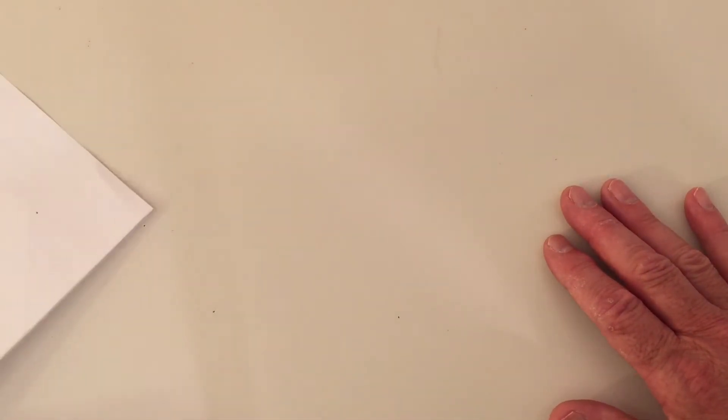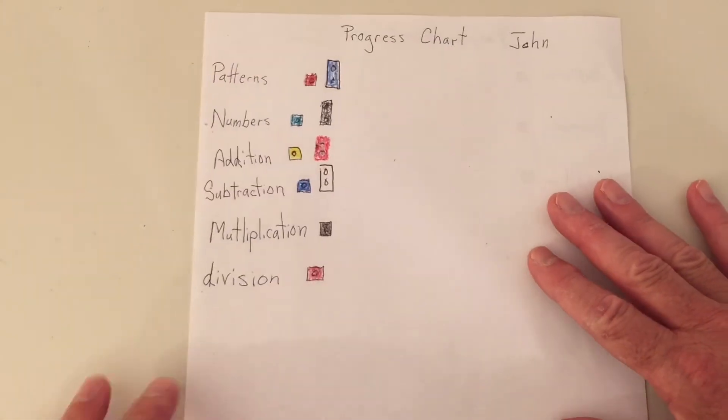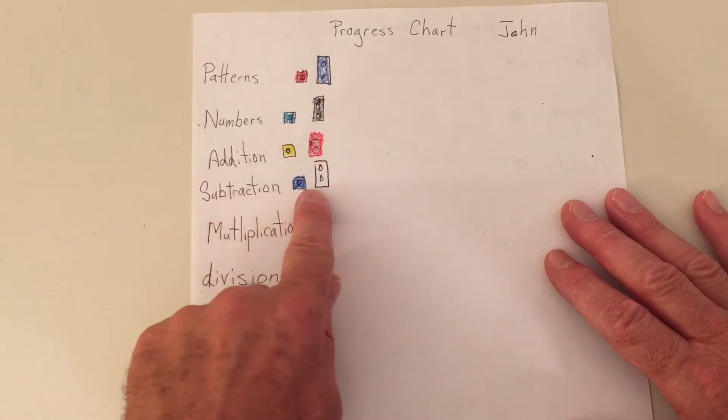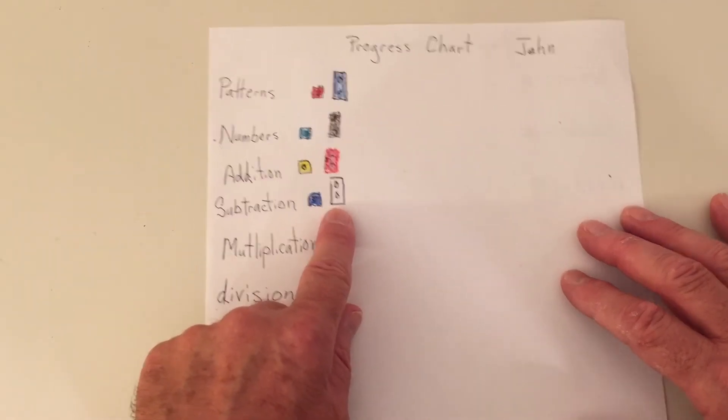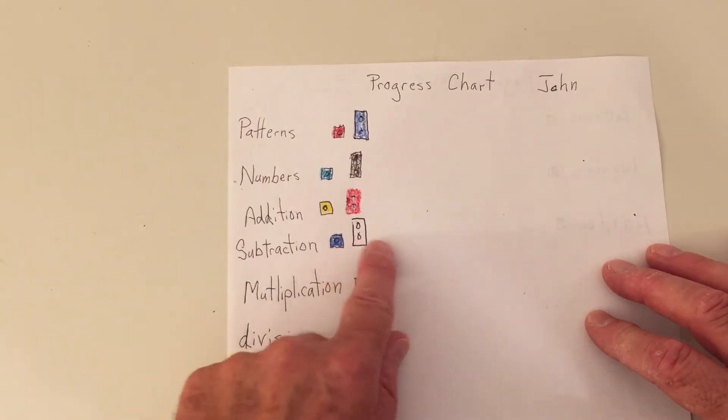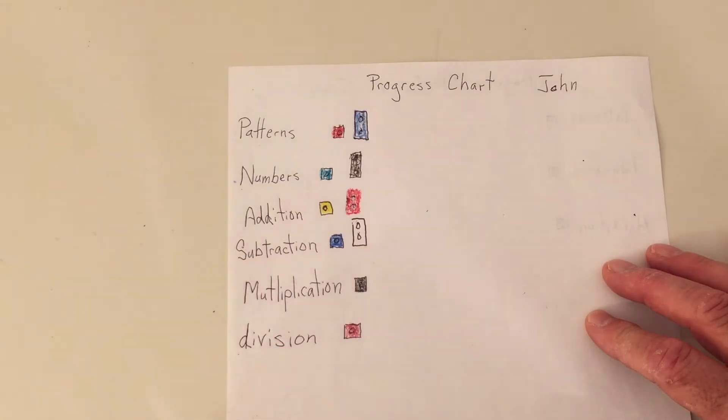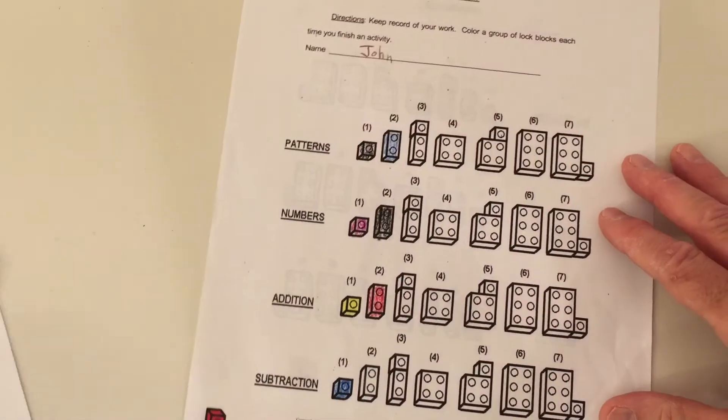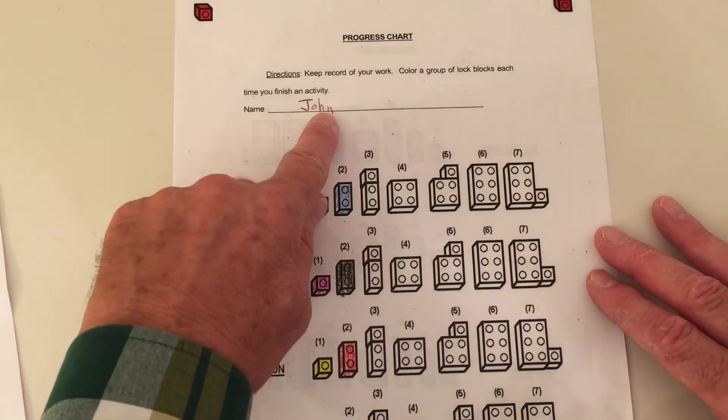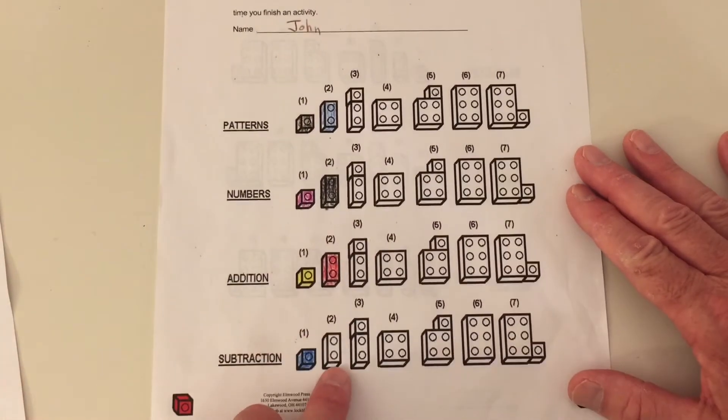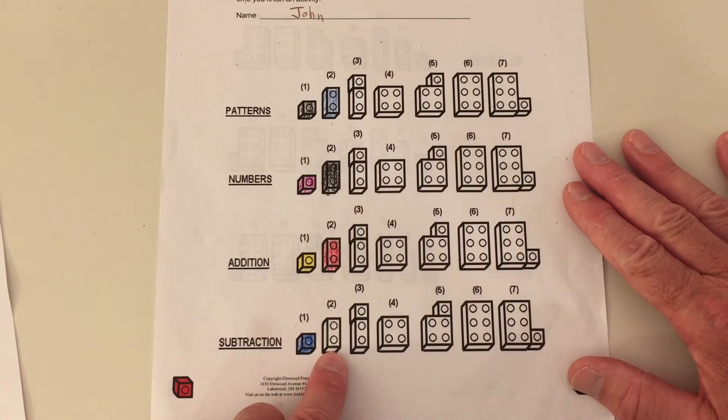And we marked our progress chart. Here we did subtraction number two. I left mine white this time. And if you downloaded the chart from the website, here you can see my name is at the top. And again, I left subtraction white. So it doesn't look like I've colored it, even though I have.